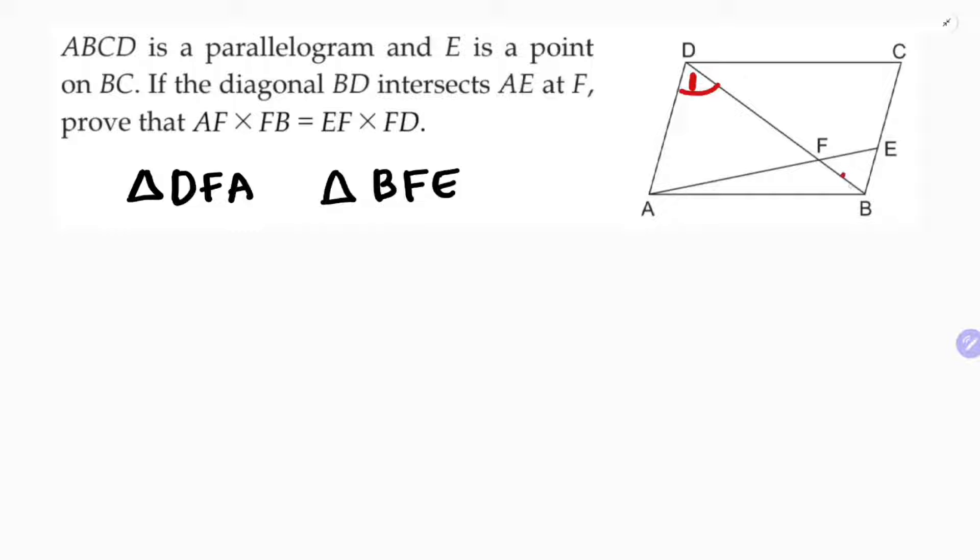Angle 1 equals angle 2 because interior alternate angles. You can say more clearly that AD is parallel to BC because it's a parallelogram.